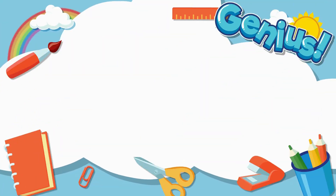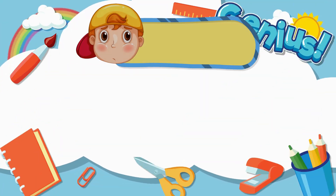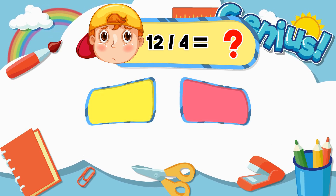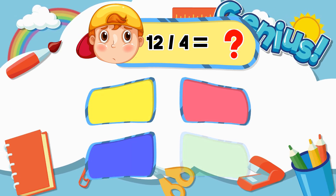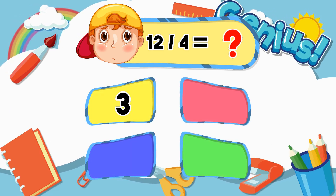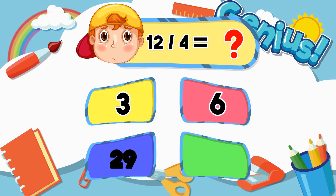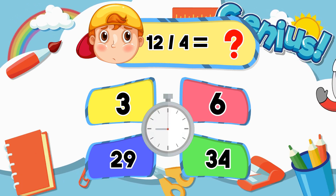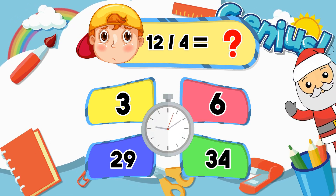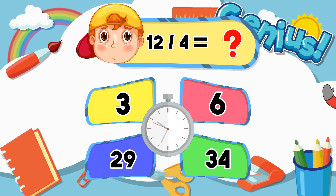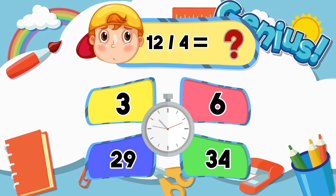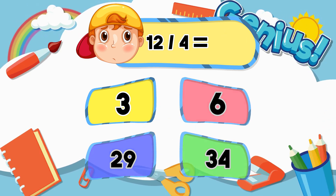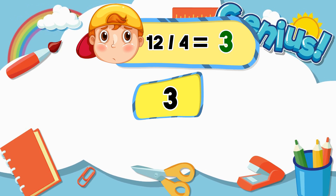What is 12 divided by 4? 3, 6, 29, 24. Answer: 3.